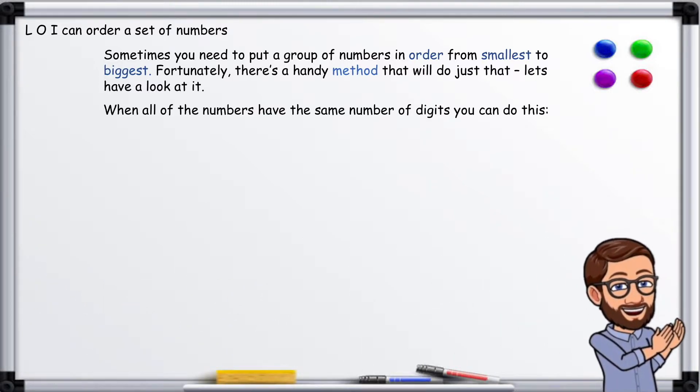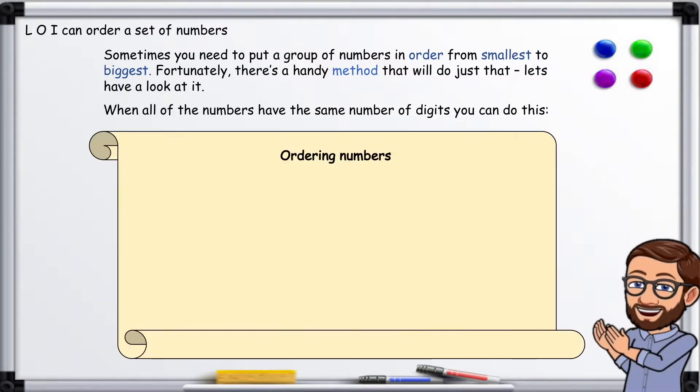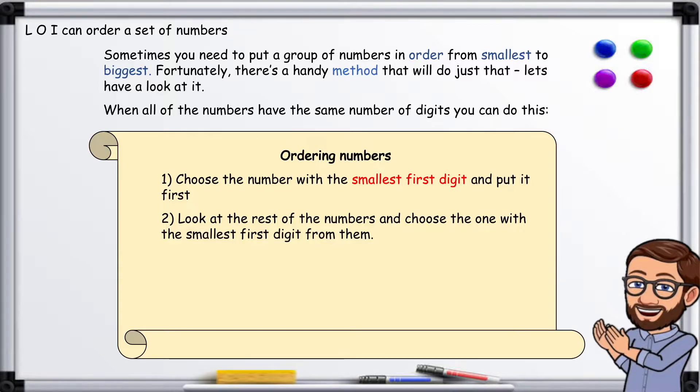When all of the numbers have the same number of digits you can do this. 1. Choose the number with the smallest first digit and put it first. 2. Look at the rest of the numbers and choose the one with the smallest first digit from them.